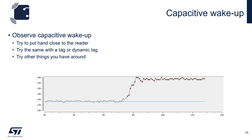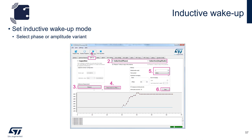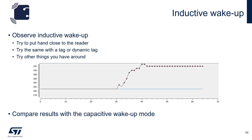Some things you can try are to put your hand closer to the reader, or try the same thing with a tag or dynamic tag, or try other objects you have around. You can also play with the sensor gain and the delta window size to see how it affects the sensitivity. For inductive wake-up, select inductive phase or inductive amplitude, and as before, take the reference measurement, write it to the offset register, select the delta window size and the timer period, and simply hit start. You can observe the same things as with capacitive — put your hand or a tag near the reader to trigger an interrupt. Compare the results with the capacitive wake-up mode.